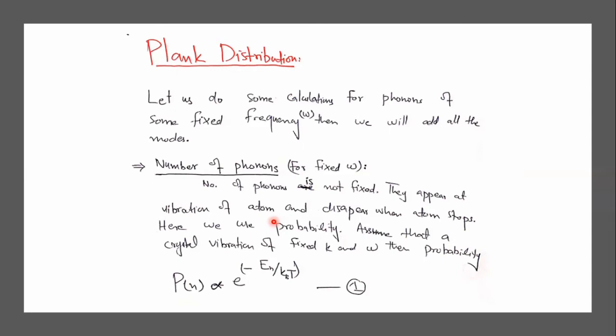At this fixed frequency, how many phonons exist in the crystal? This cannot be directly determined. You have your first phonon of that frequency, second phonon of that frequency, third phonon, and so on. Probability is something we can define, essentially related to the magnitude of the frequency.